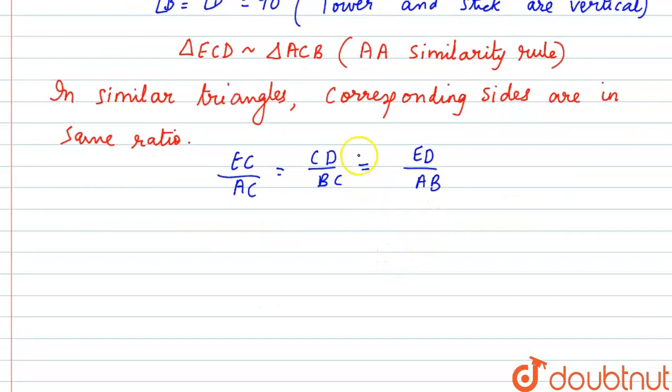But here we are interested only in the second and the last ratio because we need to find the measure of ED, the height of the tower, and we have been given the measures of CD, BC and AB. So we will take CD by BC is equal to ED by AB and we will substitute the value.